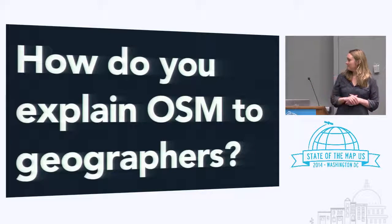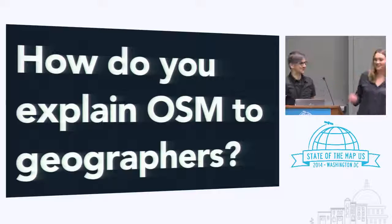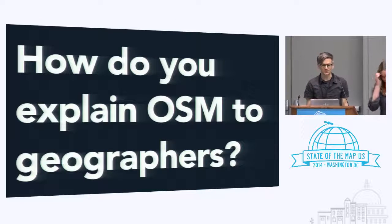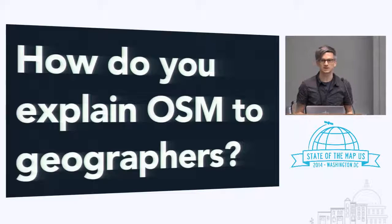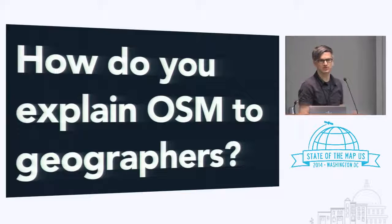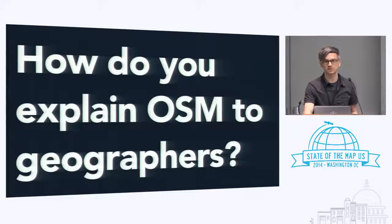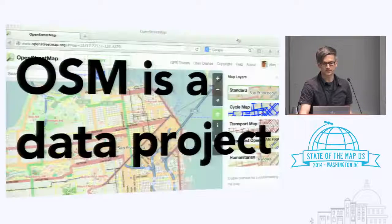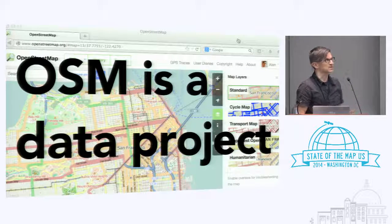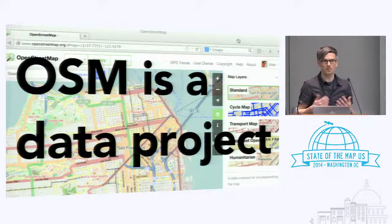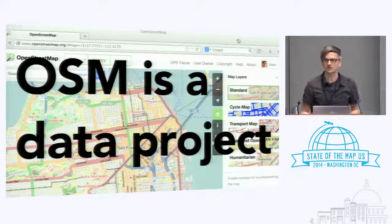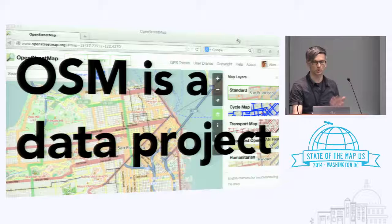So how do you explain OSM to geographers? Before doing anything hands-on with students, Alan came in and did a guest lecture to explain what OSM is in a context geography students would understand, because you explain it differently to them than to another kind of newbie. The first thing to get across is that it's a data project — it's not a map, it's really a database. That's something I find I have to explain to almost anybody when I start talking about what OpenStreetMap is.